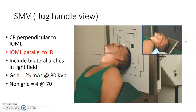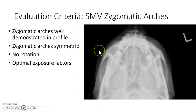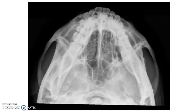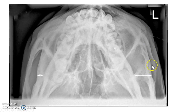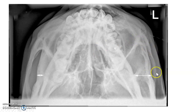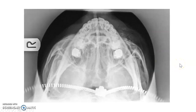Ideally you see both zygomatic arches — this image shows an obvious fracture of one arch. You can also evaluate rotation: if the arches are tilted to the side rather than straight up and down, the patient is rotated. Here, one zygomatic arch is clearly visible on one side but not the other, so you'd need to repeat for the left zygomatic arch by itself. Also watch for artifacts like zippers or necklaces that could appear in the image.